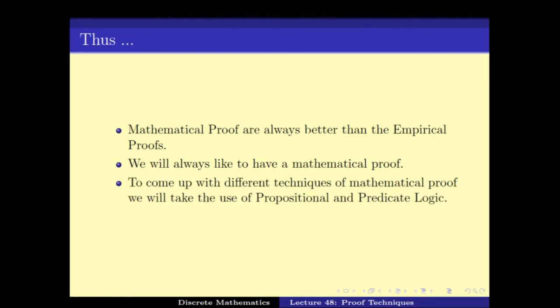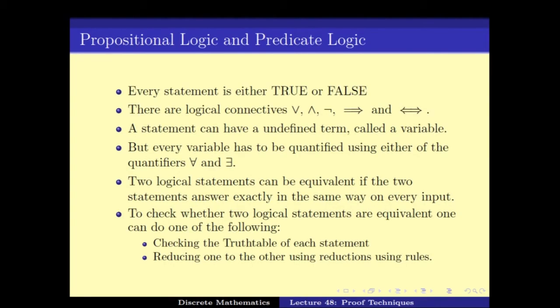To come up with different mathematical proofs, we have to use the notion of propositional and predicate logic. And we have seen how to use the propositional and predicate logic. They are basically statements that are connected using and, or, not, implies, if and only if, and so on, and two quantifiers for all and there exists.